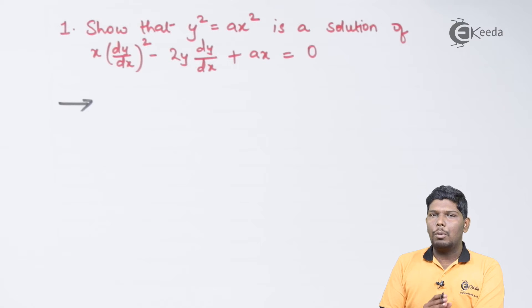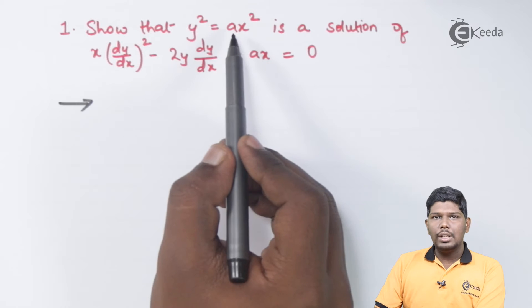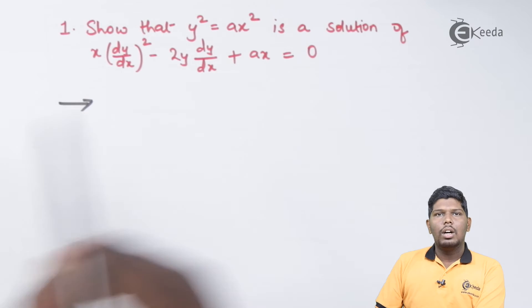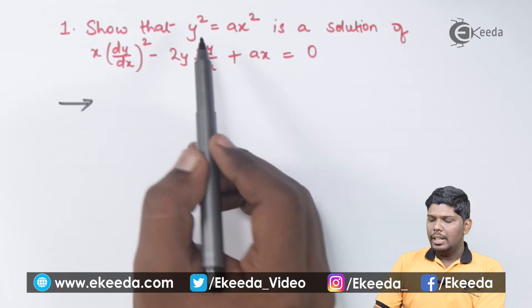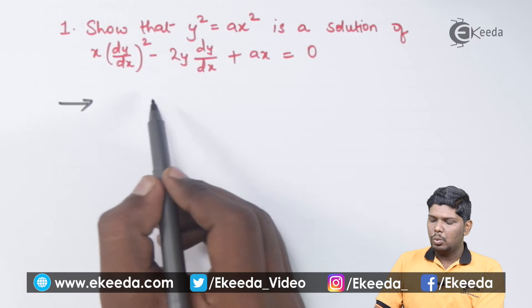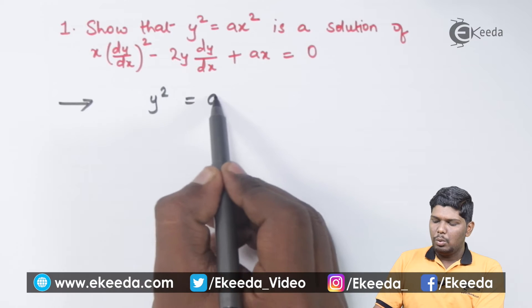...and these sums are similar, but the only difference is that in those sums the equation was given and the question was to find the differential equation. But here the equation is also given, differential equation is also given. You only need to prove that this is the result. So let us see how to obtain the differential equation of y² = ax². We have only one arbitrary constant, therefore first we differentiate it.